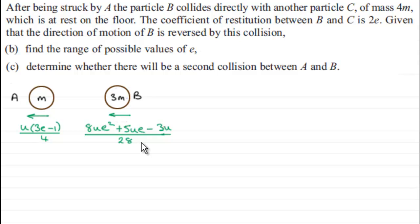So if we're to determine whether there's a second collision between A and B, then if there is a collision, I would expect this speed here to be greater than this speed. And that's where we start.